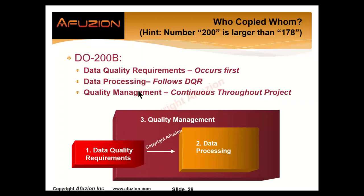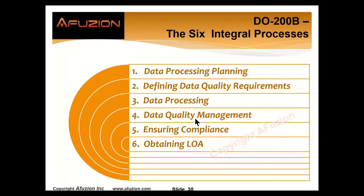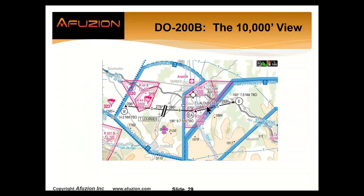Now let's look at the details of DO-200B at the 10,000-foot view. Every pixel, line, object, and figure on a map is defined by data requirements, data processing, and data quality. Some data is important: the height of a mountain, approach terrain, navigation frequencies. The colors of a boundary are less important.